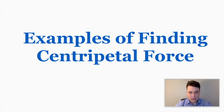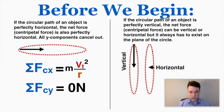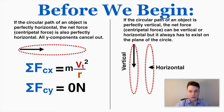Before we begin, I want to look at an interesting pattern that shows up in horizontal circles and in vertical circles. If the circular path of your object is perfectly horizontal, the net centripetal force is also perfectly horizontal, so all y components cancel out. Whenever you're dealing with a circle in the horizontal direction, all forces in the y direction cancel, and all forces in the x direction add together to equal the centripetal force, which is equal to mv squared over r.